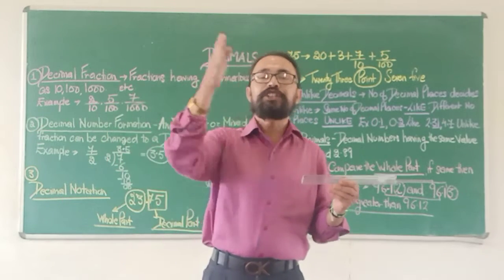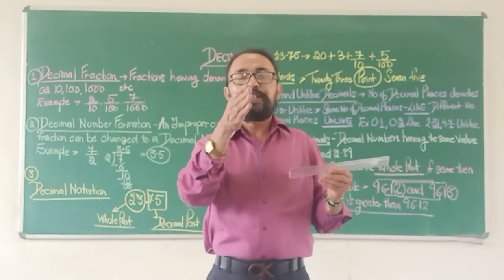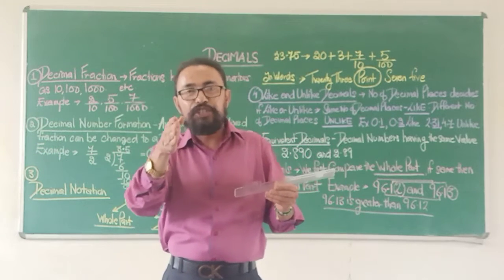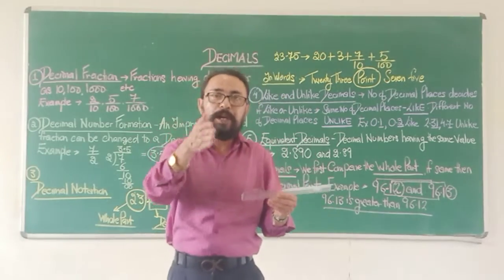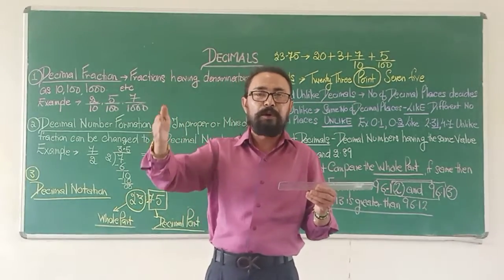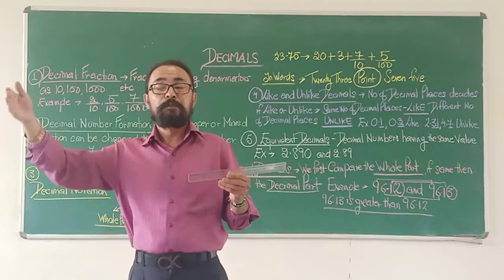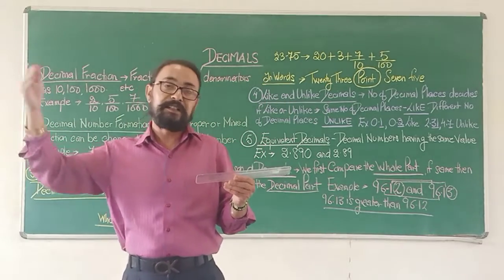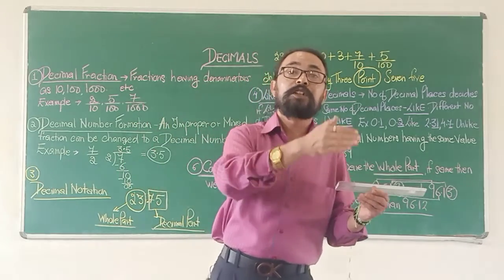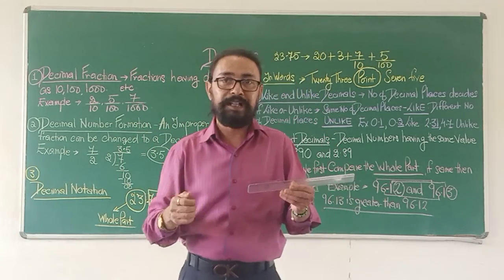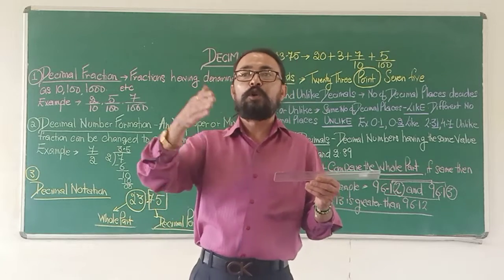And in mathematics also, we have 10 divisions before we reach the next number. That means we have 0.1, 0.2, 0.3, 0.4, 0.5, 0.6, 0.7, 0.8, 0.9, and then it goes to the next whole number, which increases by 1. That way it goes on.